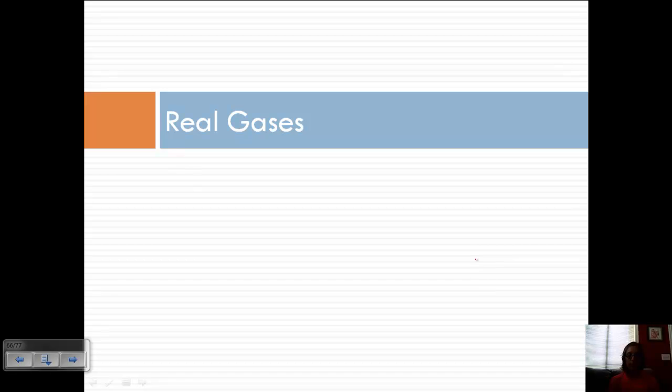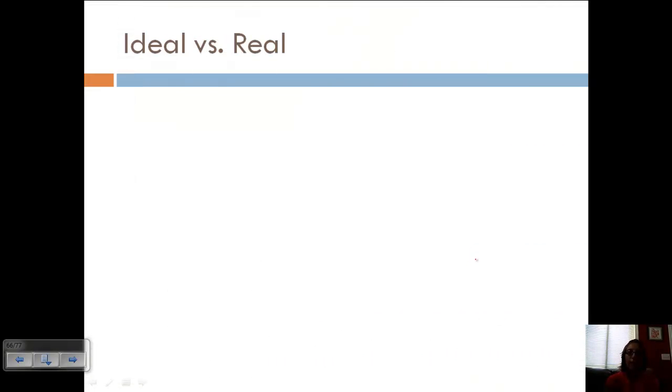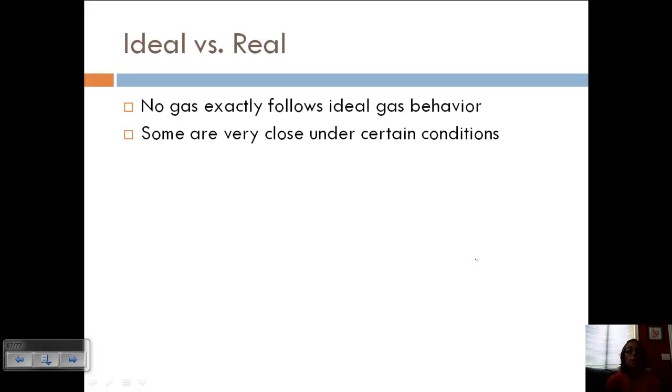So we've talked a lot about ideal gases and kinetic molecular theory and relating all those things together. But, you know, we live in a real world. Not all gases behave as ideal gases. So let's look at the difference between real gases and ideal gases. So no gas exactly follows ideal gas behavior. Some are very close under certain conditions, and so that's important.